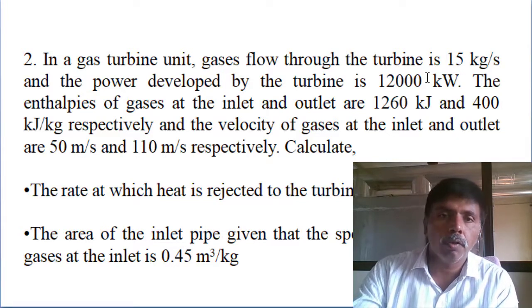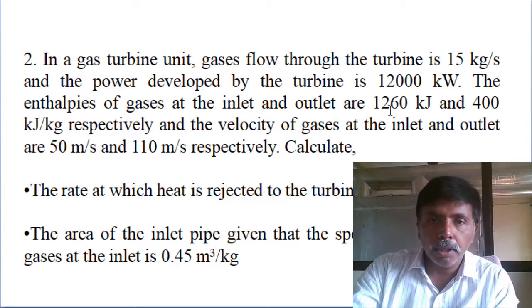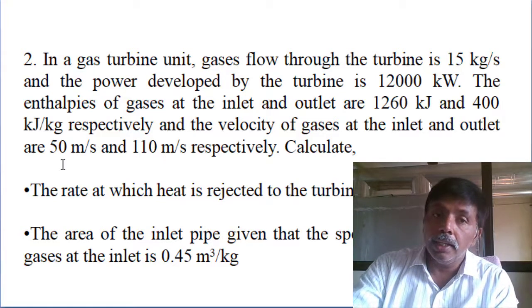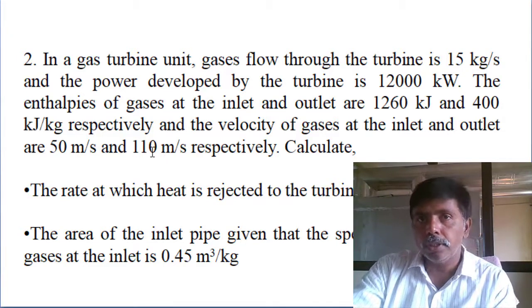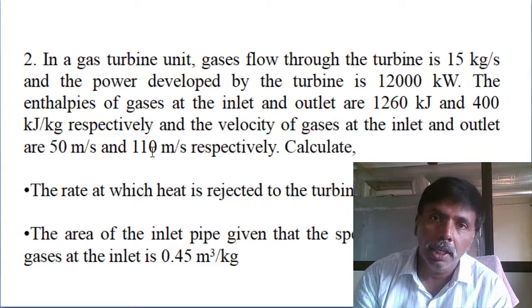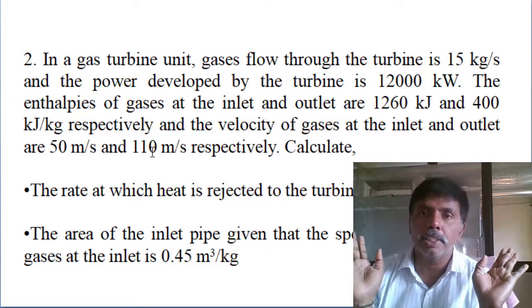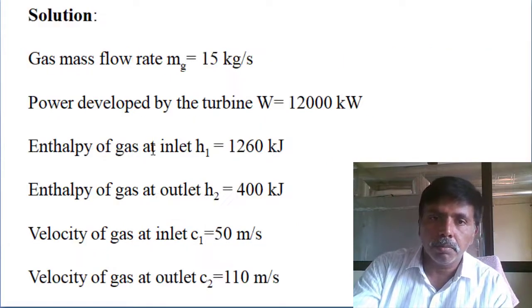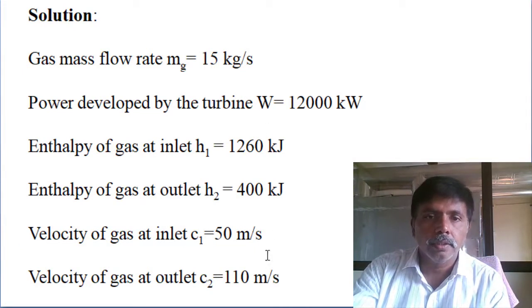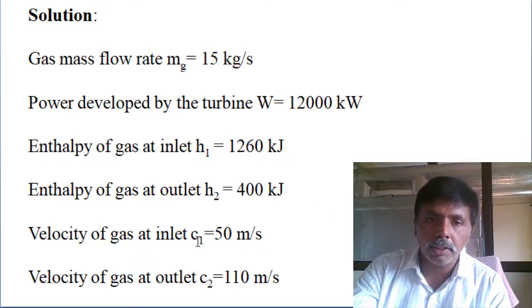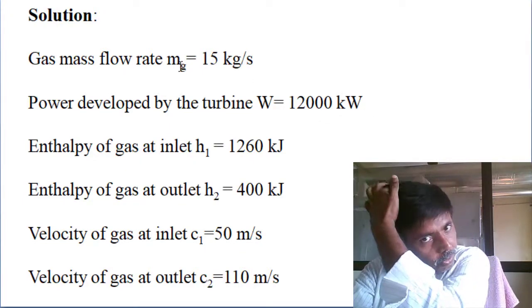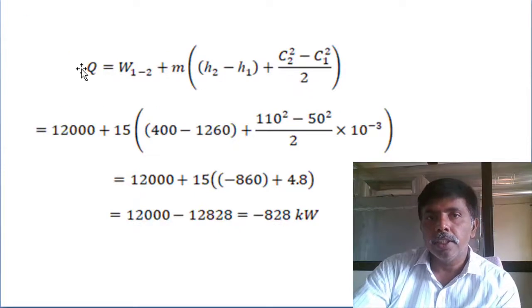Here we want to determine two things: the area of the inlet pipe and the heat rejected — which will be a negative value. They have provided mass flow rate, enthalpy in, enthalpy out, velocity in, velocity out, and power output of 12,000 kW. There is no head difference mentioned, so the turbine is horizontal. Applying the steady flow energy equation: Q = W + m·[(h2 - h1) + (c2² - c1²)/2].